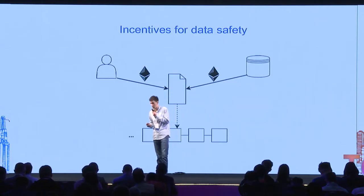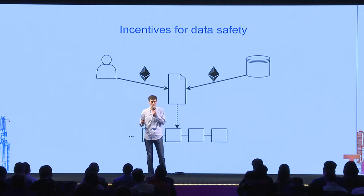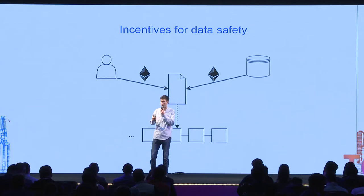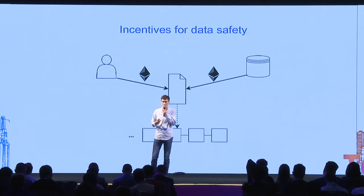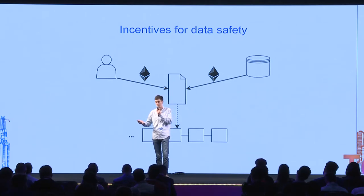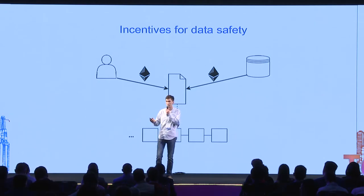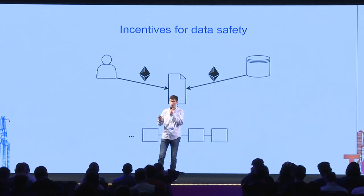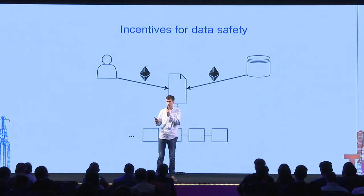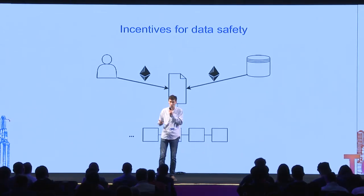We also need data availability and an incentivization layer to motivate nodes to keep data online. If a client stores data on some nodes and those nodes go offline and lose the data, the client must be compensated. Conversely, if a client refuses to pay for storage, the nodes must be compensated. That's why, before putting data on the network, a smart contract on the blockchain should be created and funded by both parties — client and node — with security deposits. These deposits act like insurance and are paid to one party if the other operates incorrectly, motivating both sides to behave honestly.